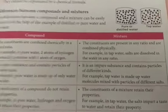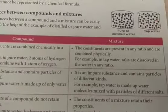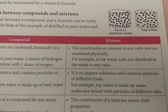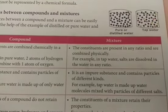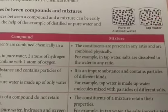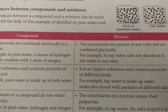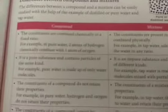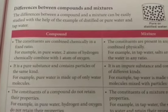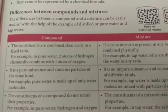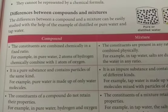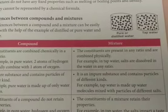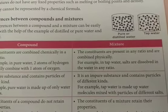In mixtures, the constituents are present in any ratio and are combined physically. For example, in tap water, salts are dissolved in water in any ratio — one student can mix 10 grams of salt in 100 ml of water, another can mix 20 grams. We can vary the concentration, so no fixed ratio is present in mixtures.